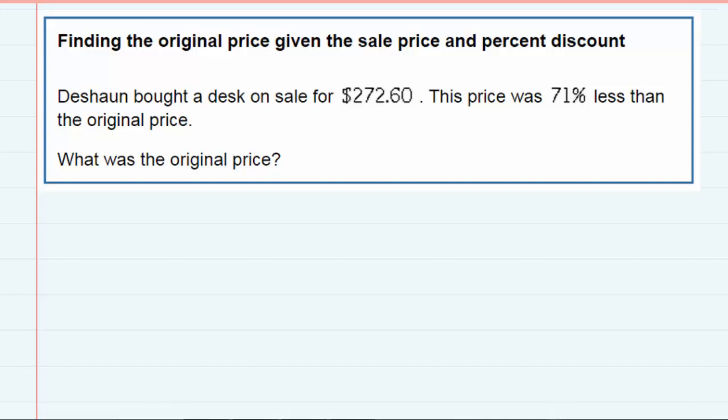Finding the original price given the sale price and percent discount. Deshawn bought a desk on sale for $272.60. This price was 71% less than the original price.